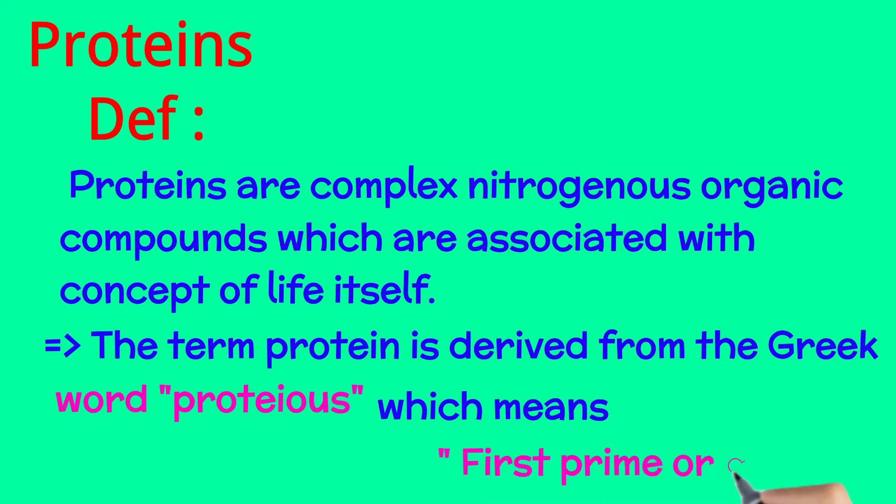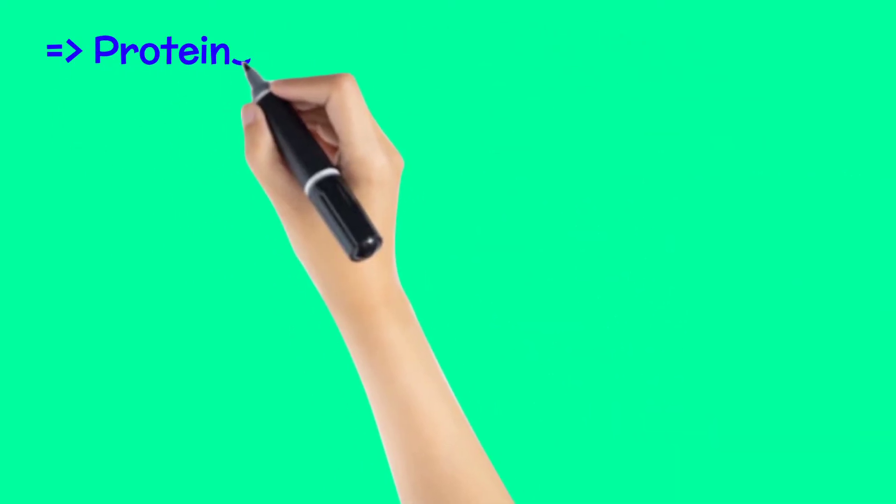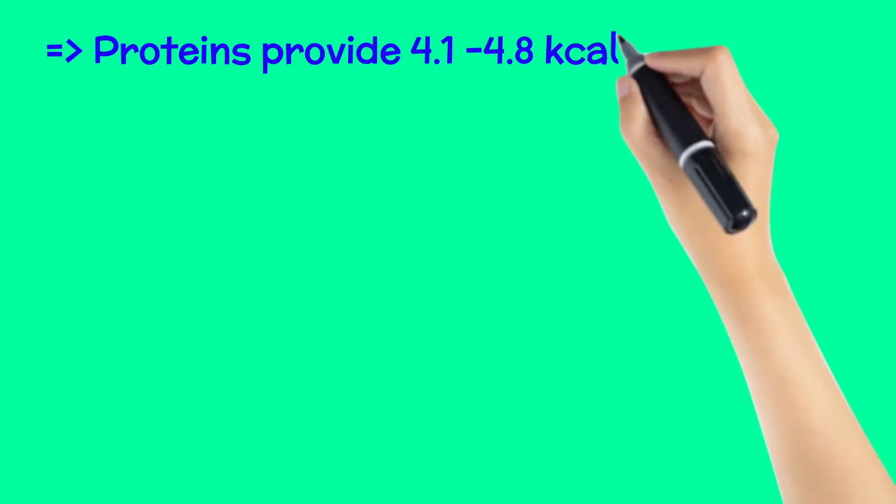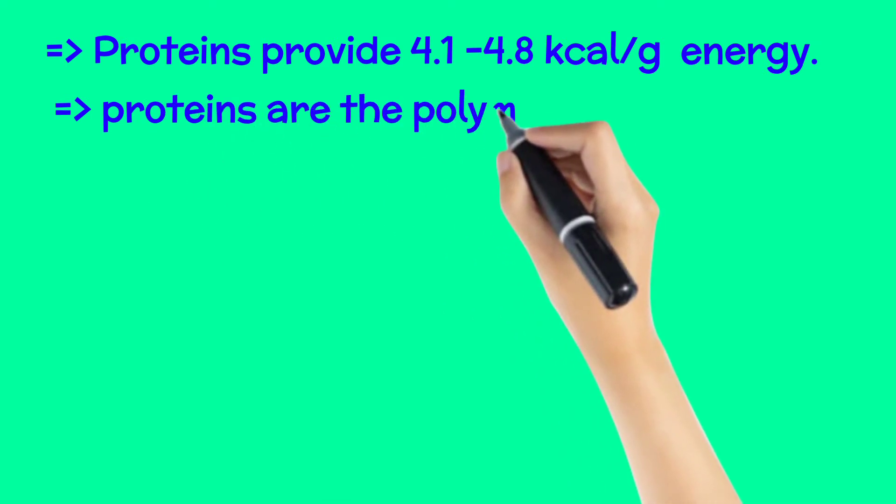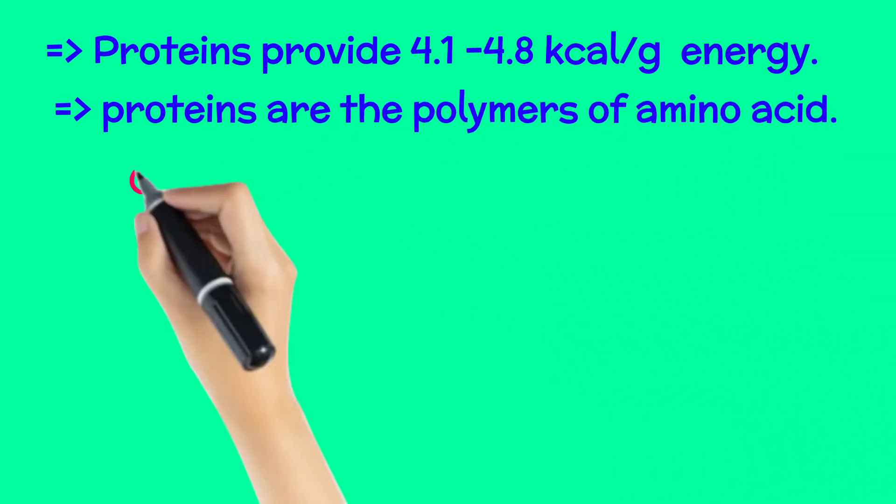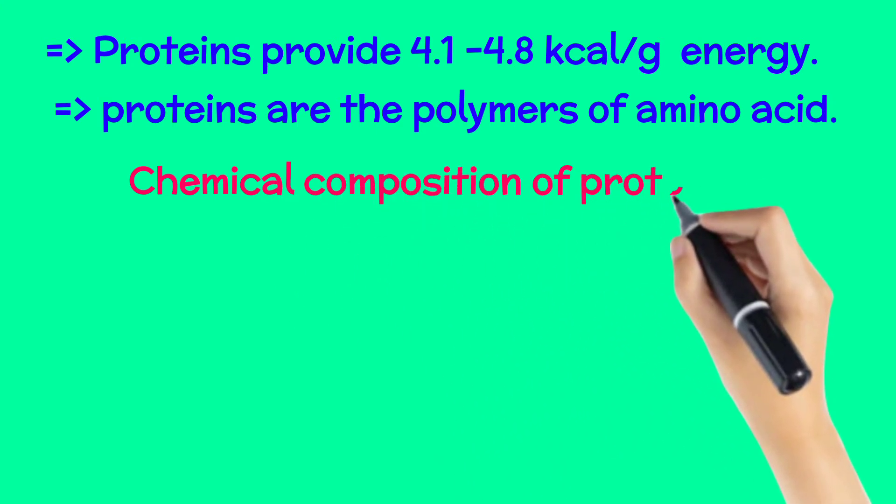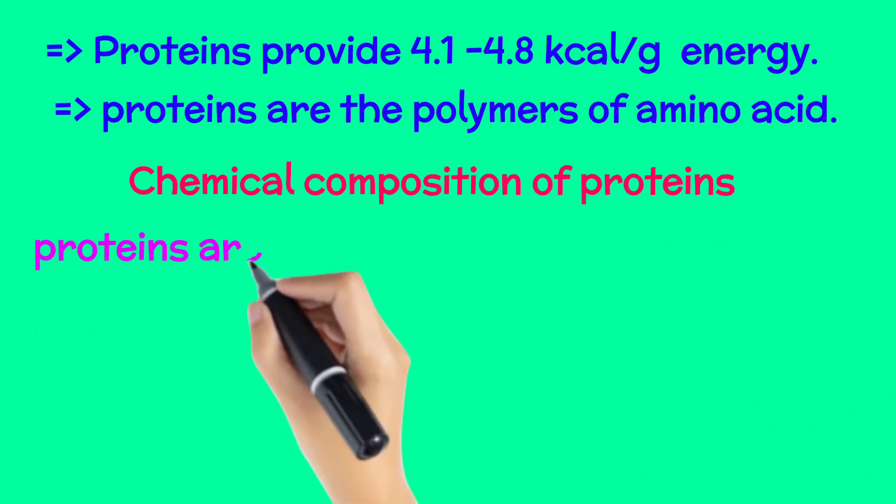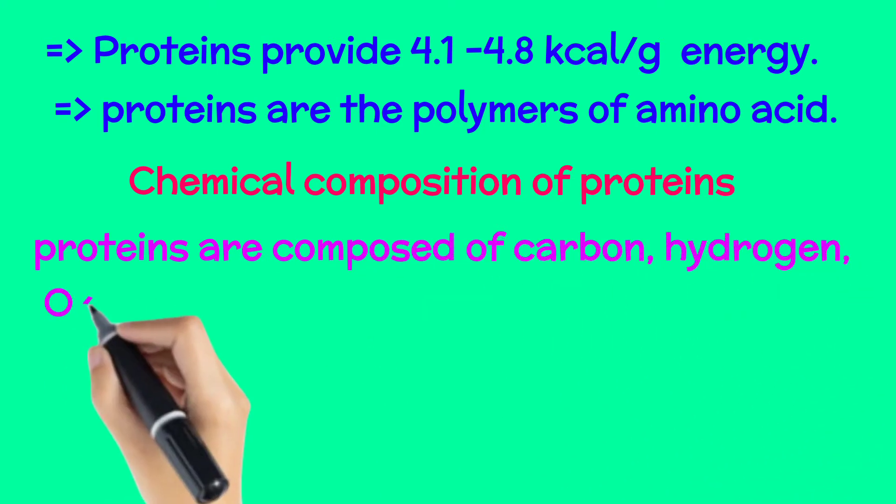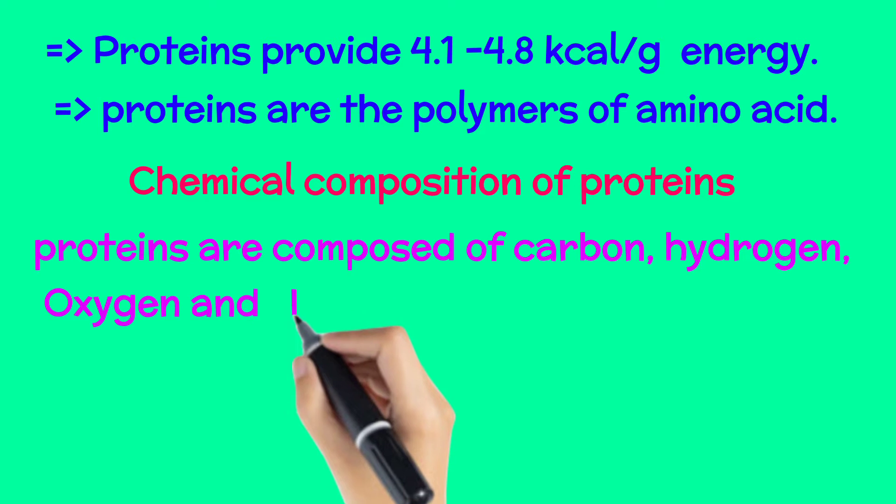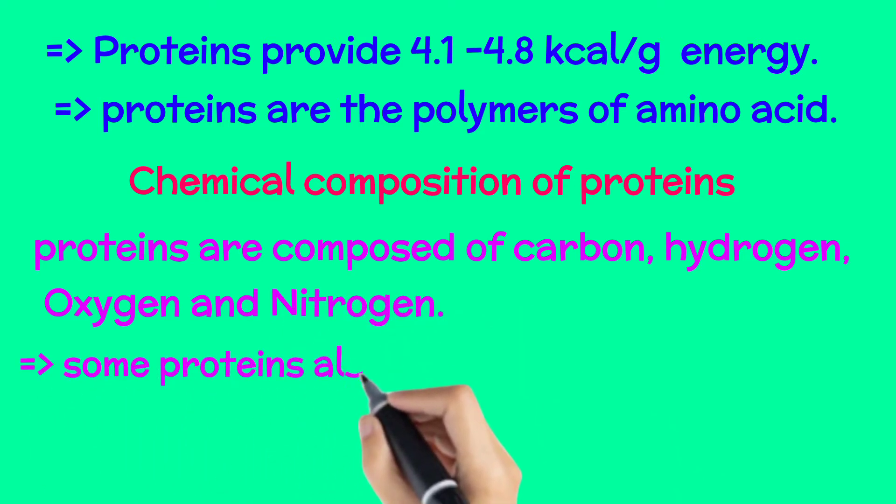Proteins provide 4.1 to 4.8 calories per gram energy. Proteins are the polymer of amino acids. Now we come toward the chemical composition of proteins. Proteins are composed of carbon, hydrogen, oxygen, and nitrogen.